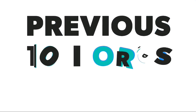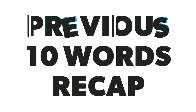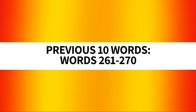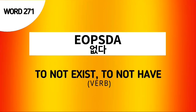Now let's proceed to our previous 10 words recap. As of now, the previous 10 words are words number 261 to 270. But don't forget our word for today — word number 271, Opda — which means to not exist or to not have.